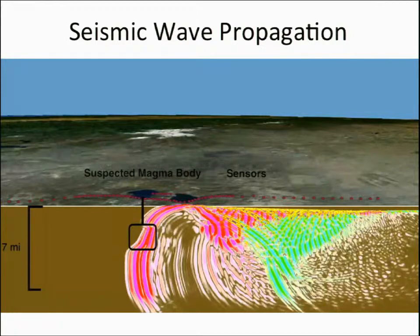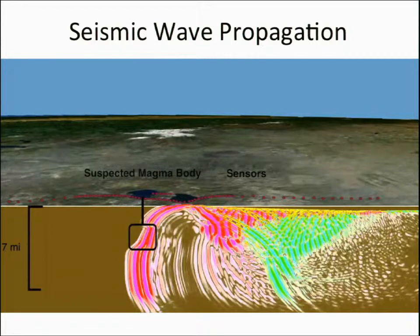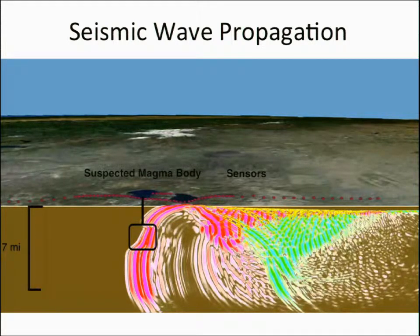To illustrate the difficulty of imaging magma bodies, I'm going to show you a finite difference waveform simulation of an explosion traveling through a small magma body. This has a simple velocity-depth gradient that's uniform throughout the model, and then we've superimposed a low-velocity magma body. In pink are the compressional waves — these calculations were done with E3D — and in green are the shear waves.